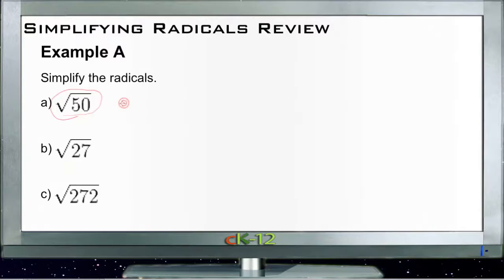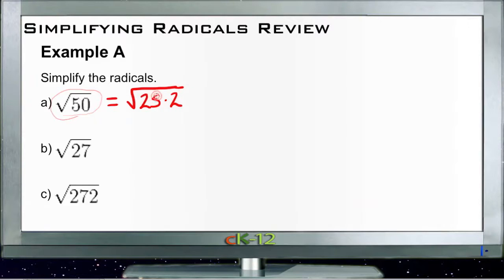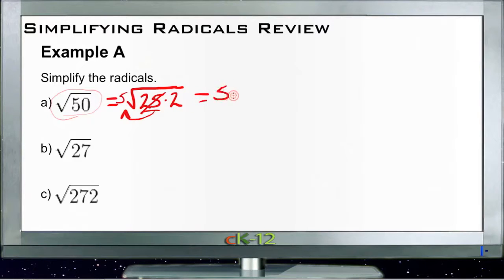So what we can do to simplify this is to break 50 up into 25 times 2. So the square root of 50 would be the same thing as the square root of 25 times 2. Now 2 we still don't have the square root of, but the square root of 25 we do. 25 is a perfect square, so we can take it out from underneath the root and put it outside as the number 5, because 5 is the square root of 25. So the square root of 25 times 2 is the same thing as 5 times the square root of 2. That is the simplified version of the square root of 50.